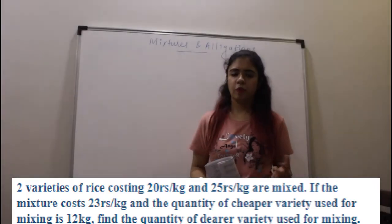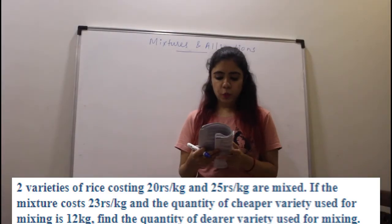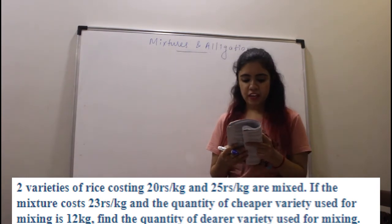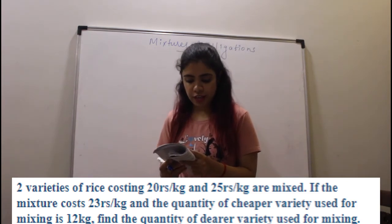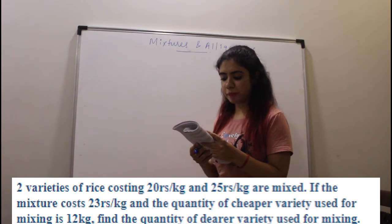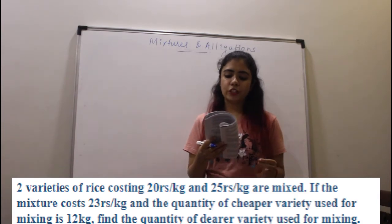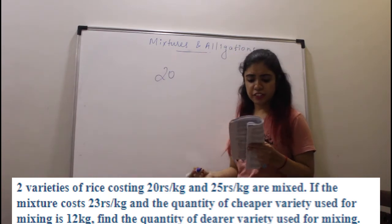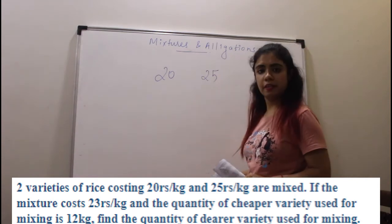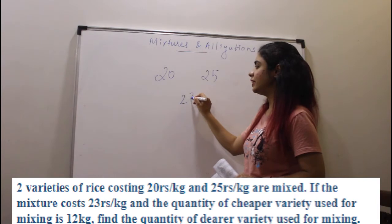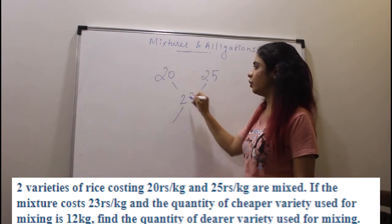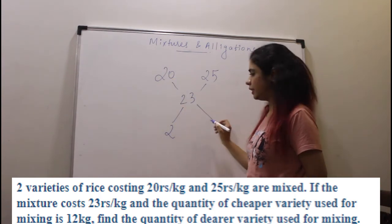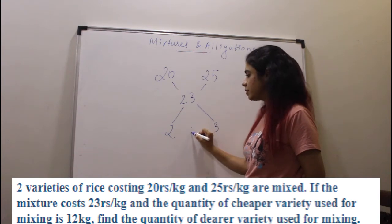Now let's look at the next question. Two varieties of rice costing 20 and 25 rupees per kg are mixed. If the mixture costs 23 rupees per kg and the quantity of cheaper variety used for mixing is 12 kgs, find the quantity of the dearer variety. The cheaper price is 20 rupees, the dearer price is 25 rupees, and the price of the mixture is 23 rupees. Taking a cross: 25 minus 23 = 2, and 23 minus 20 = 3, so the ratio becomes 2 is to 3.